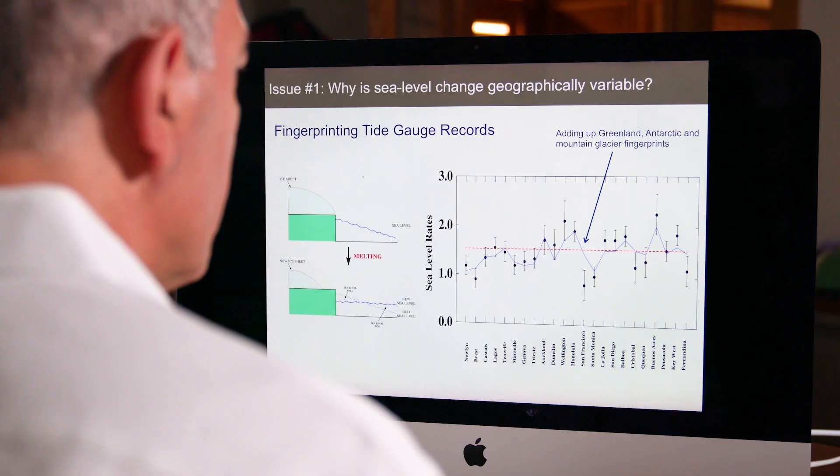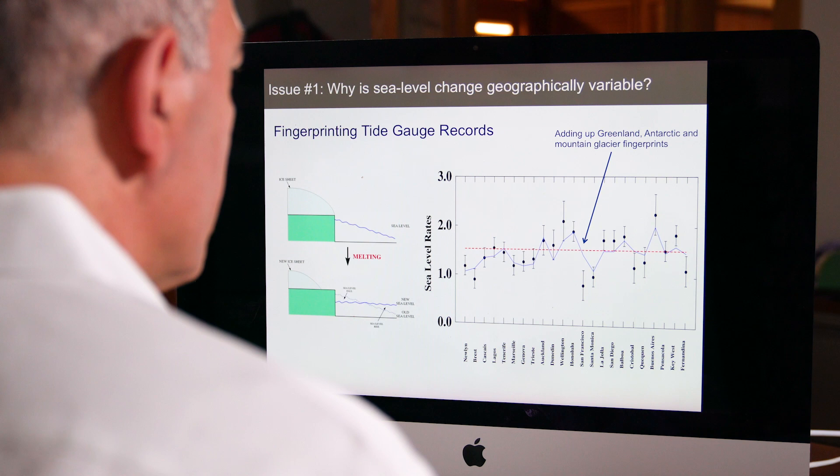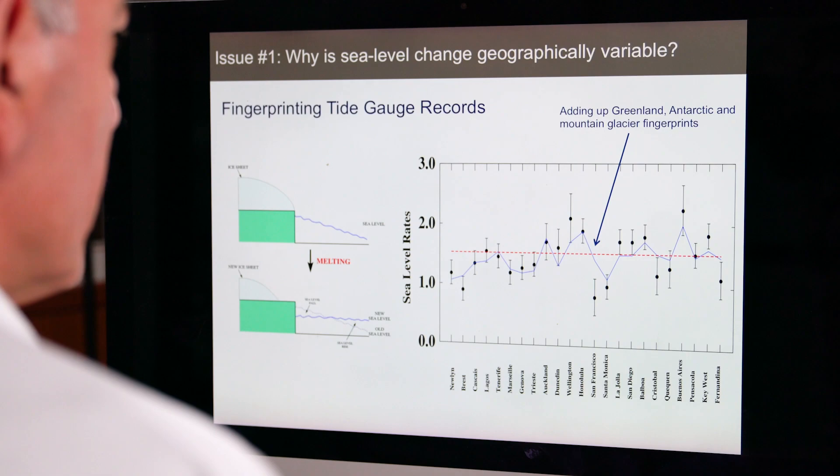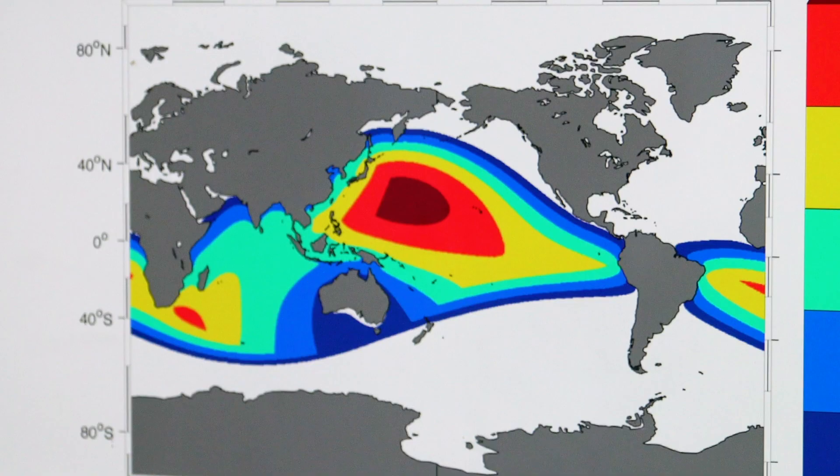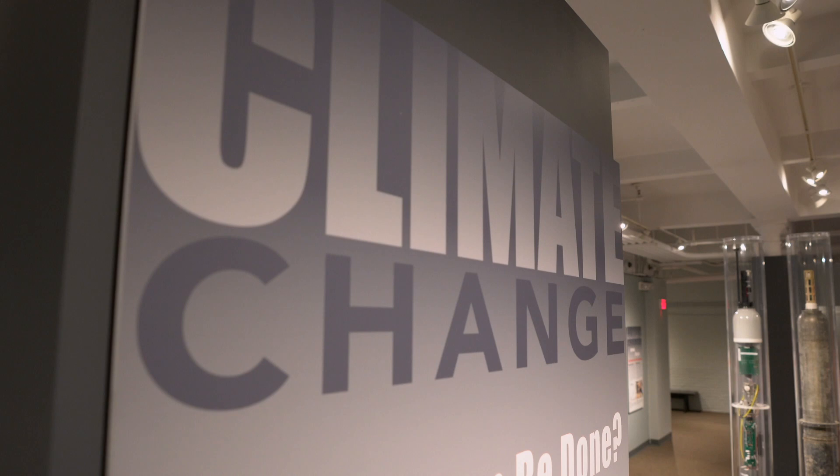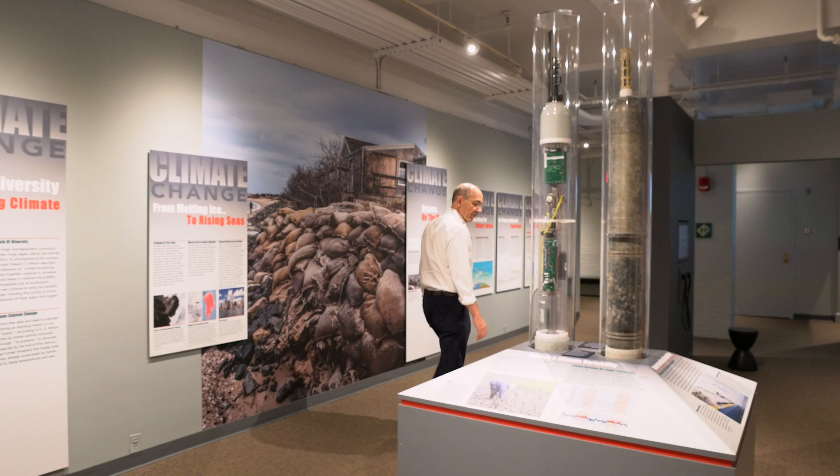The data that I use depends on the problem that I'm looking at. If I'm interested in modern sea level, I would look at tide gauge data. We also use a lot of satellite data to constrain sea level. But if I'm looking at more ancient sea level events, then of course my observations all come from the geological record.